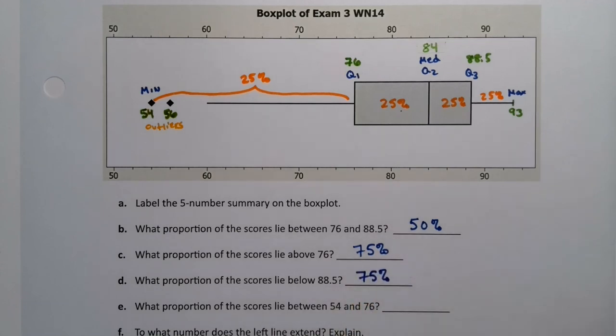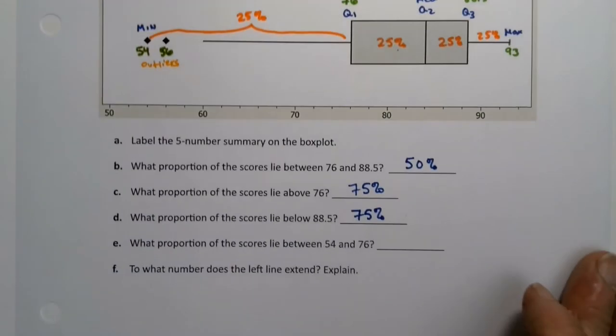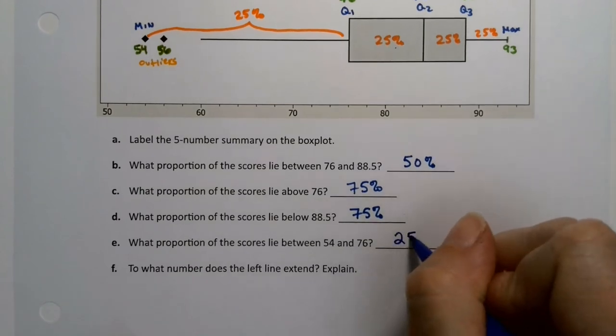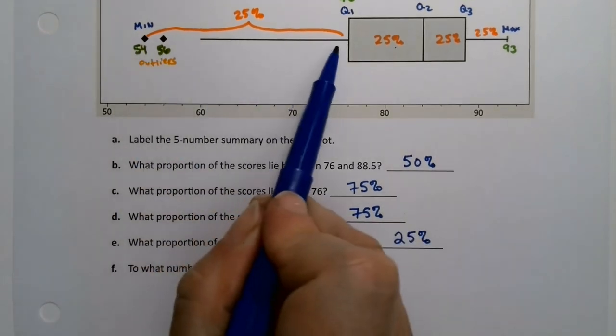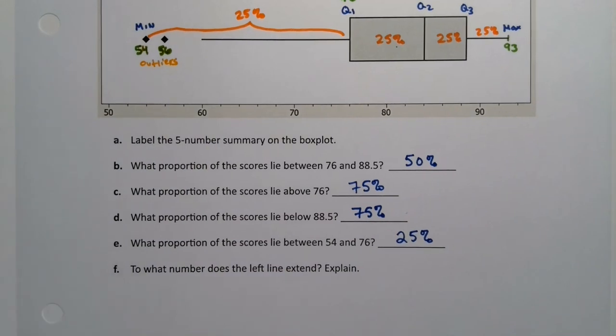And then what about lying between 54 here and 76 here? I should probably have asked that one to begin with, but it's 25%. It's the whole thing—makes 25%. So then a good question to ask would be: where is this whisker going to?